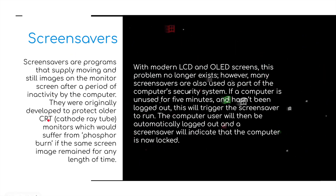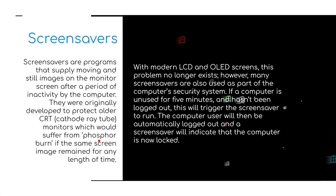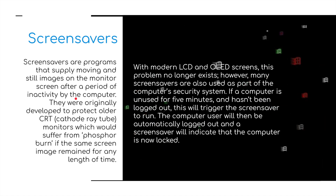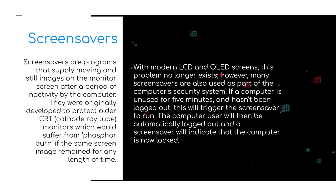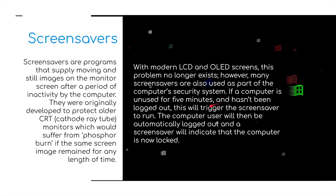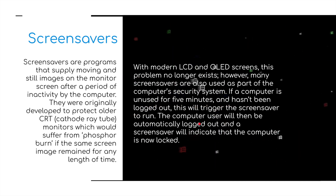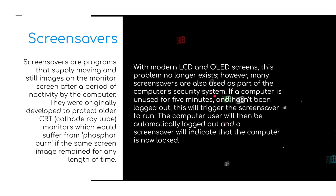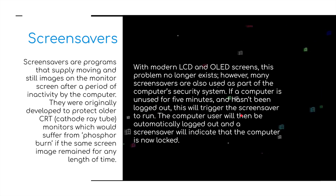Mentioning screen savers — back in the day, old cathode ray tube monitors could suffer from something called phosphor burn. If an image remained still on the monitor for a long period of time, it could cause a shadowing effect. With modern LCD and OLED screens, this problem no longer exists. However, many screen savers are also used as part of the computer security system — if a computer is unused for five minutes and hasn't been logged out, this triggers a screen saver to run, automatically logging the user out so they must enter their password to regain access.